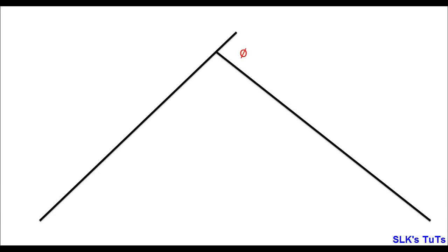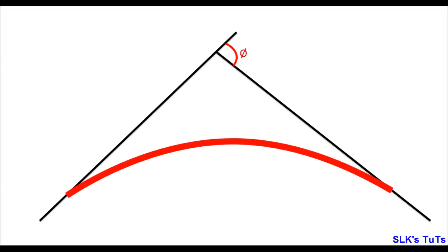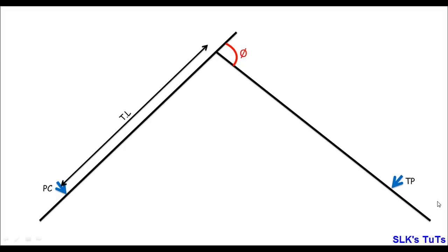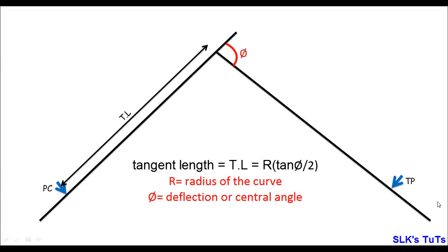Let's say a road is going to deflect with some angle called the deflection angle, and we have to set out a horizontal curve between these two lines, also known as tangent lines. The first thing in this method is to locate the start point of the curve (PC) and the end point (TP). These two points can be located by determining the tangent length: T = R × tan(Δ/2).